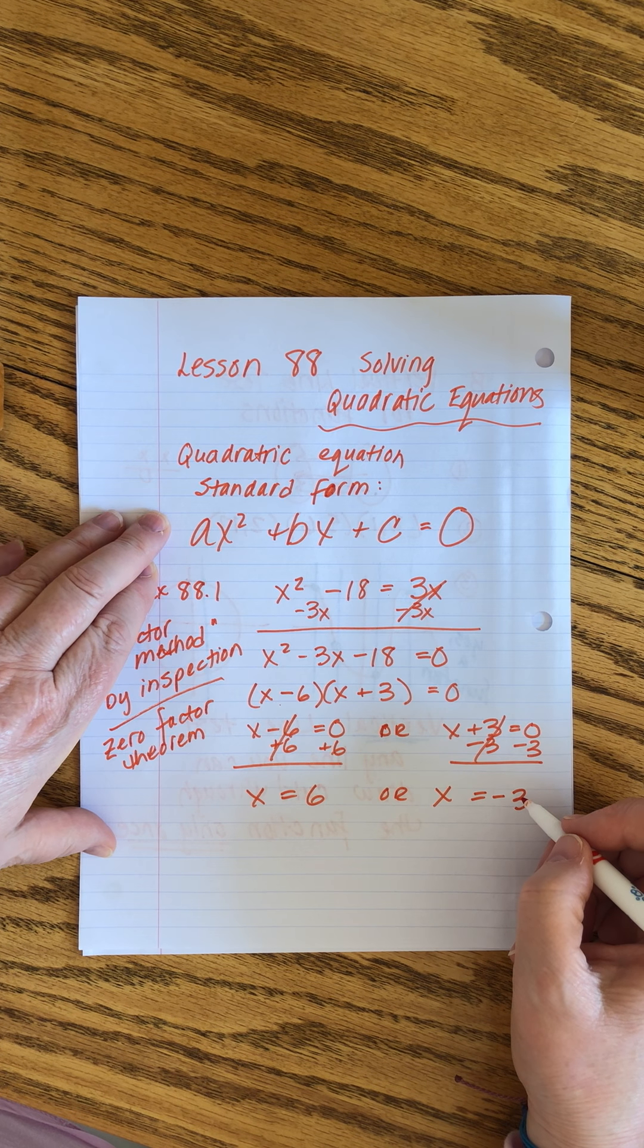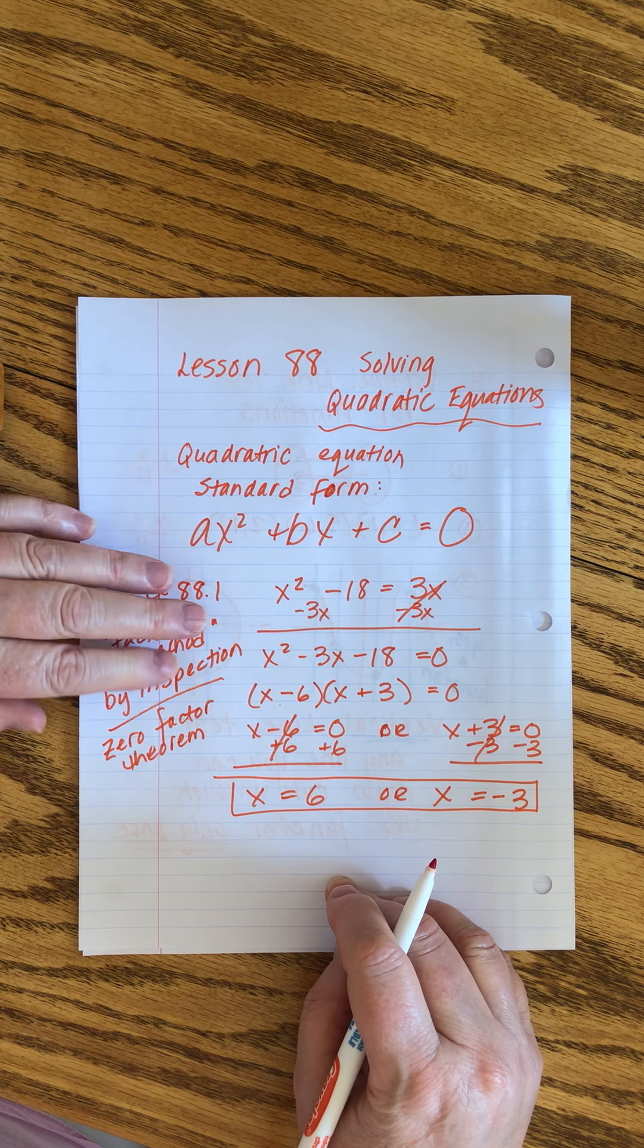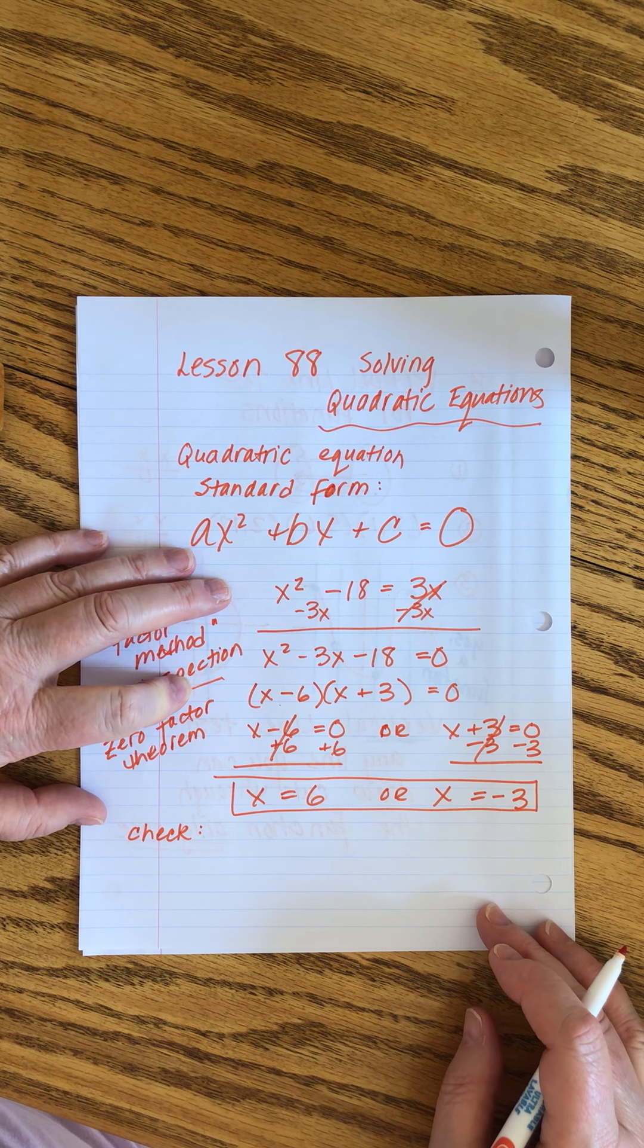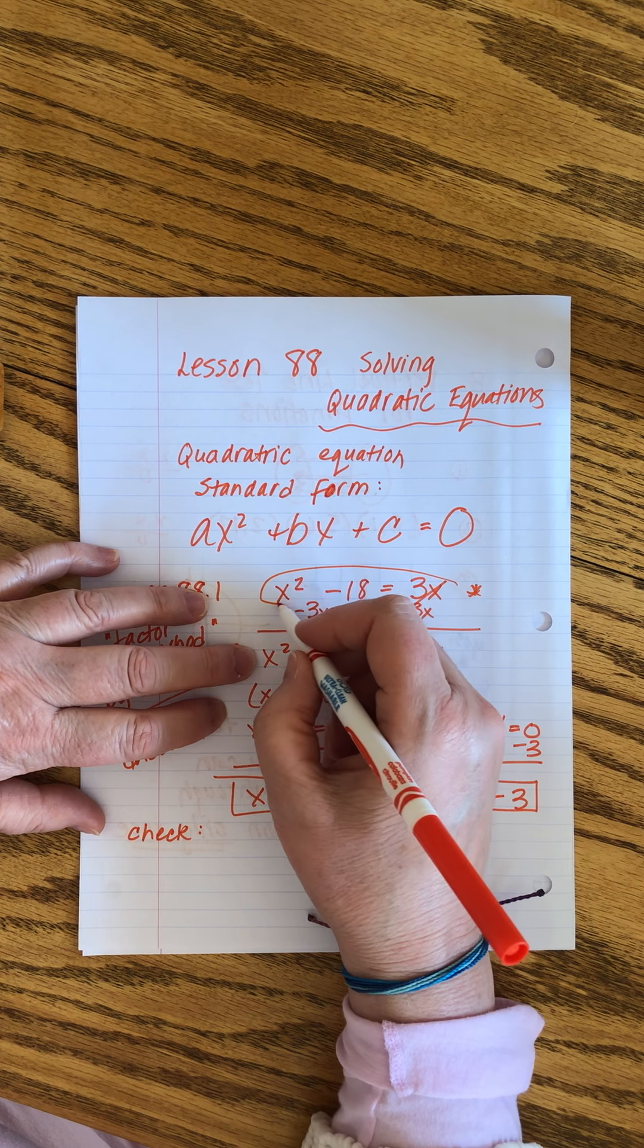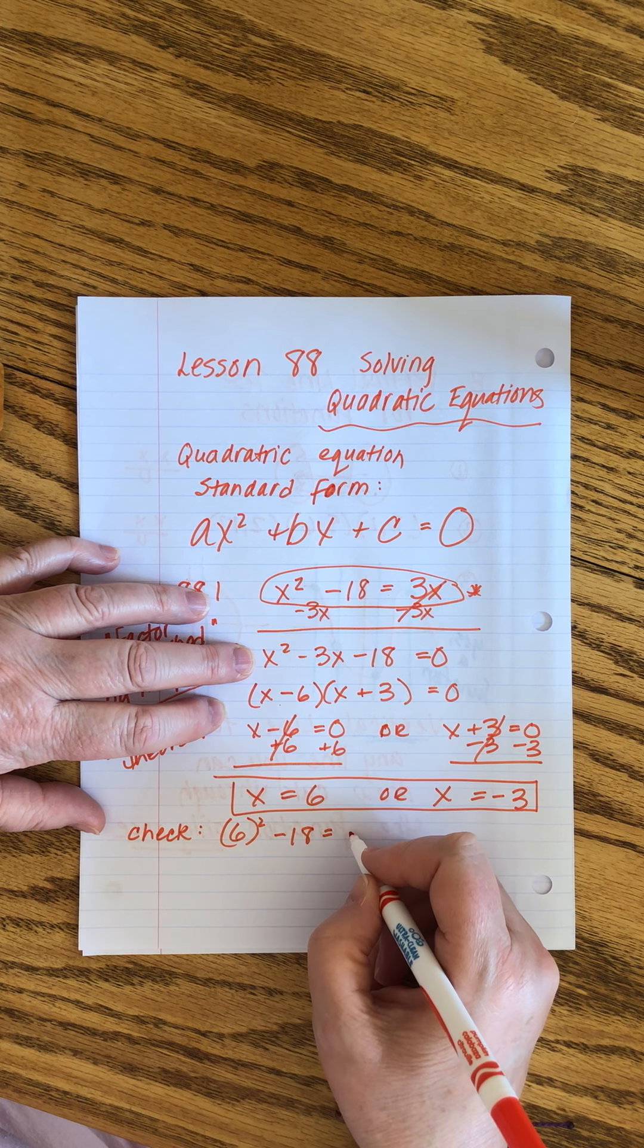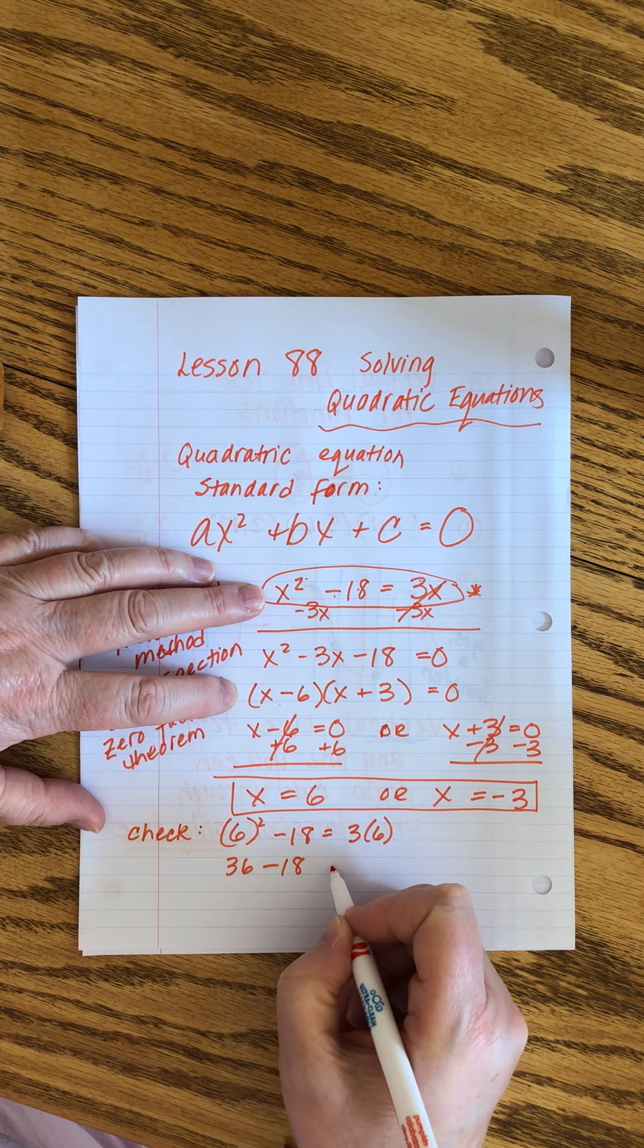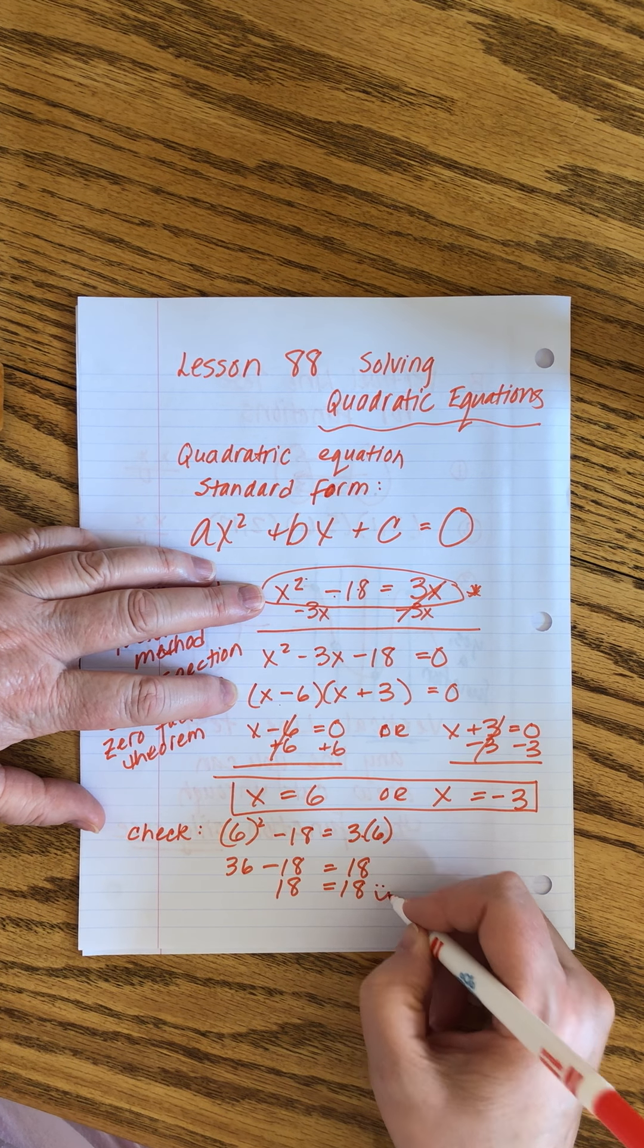What he wants us to do is plug back in to our original expression and make sure it works. So we're going to do a little check section. If x is 6, I'm using this original expression. That tells me that 6 squared minus 18 should equal 3 times 6. This is 36 minus 18 equals 18. It works.